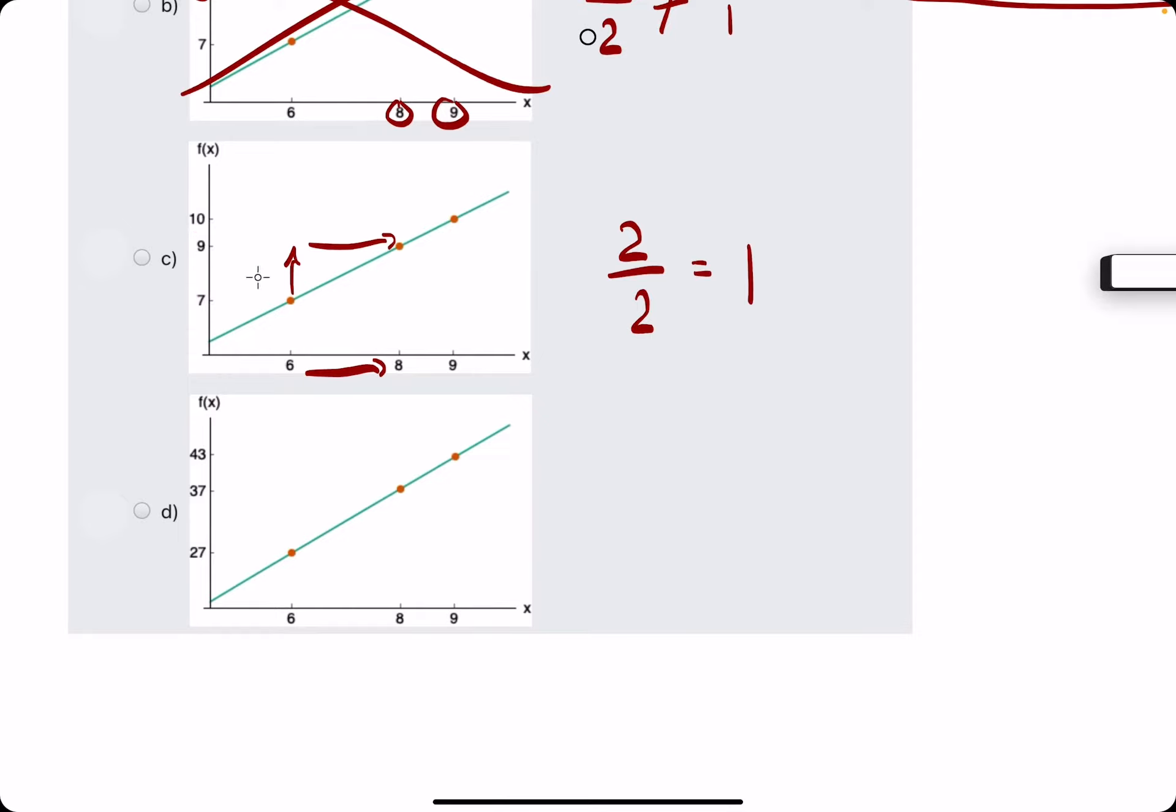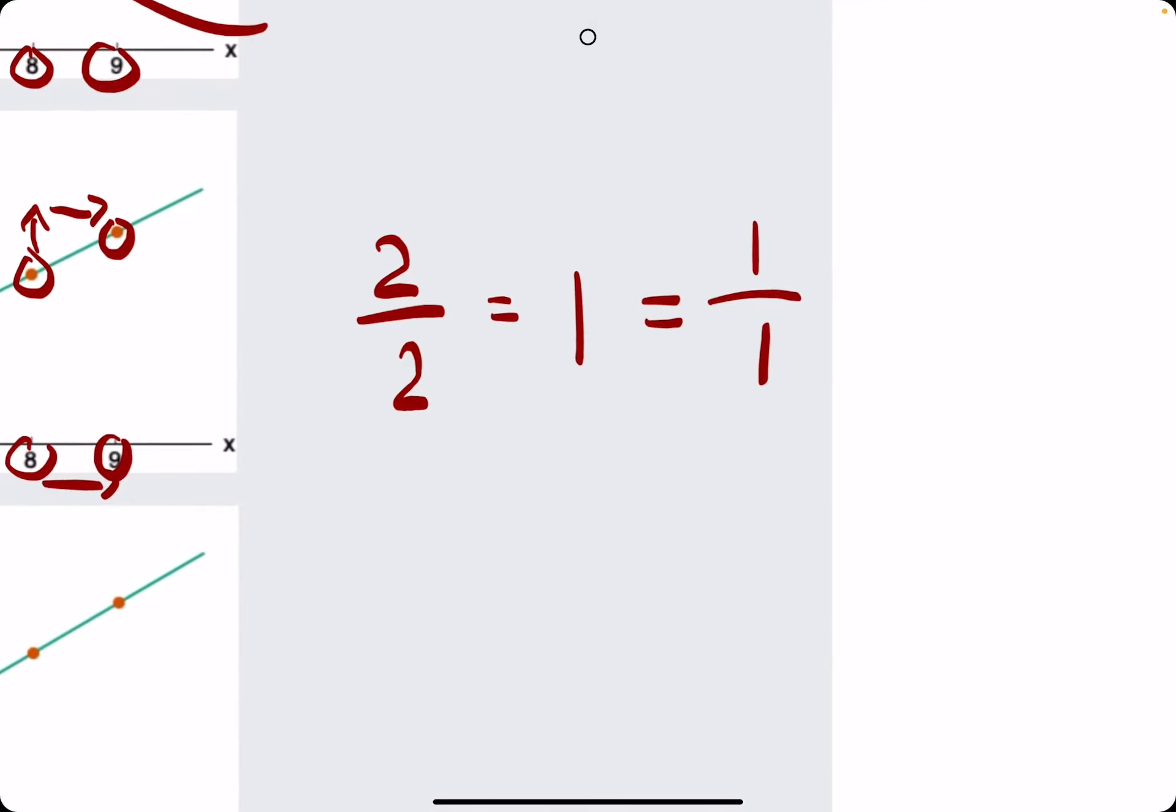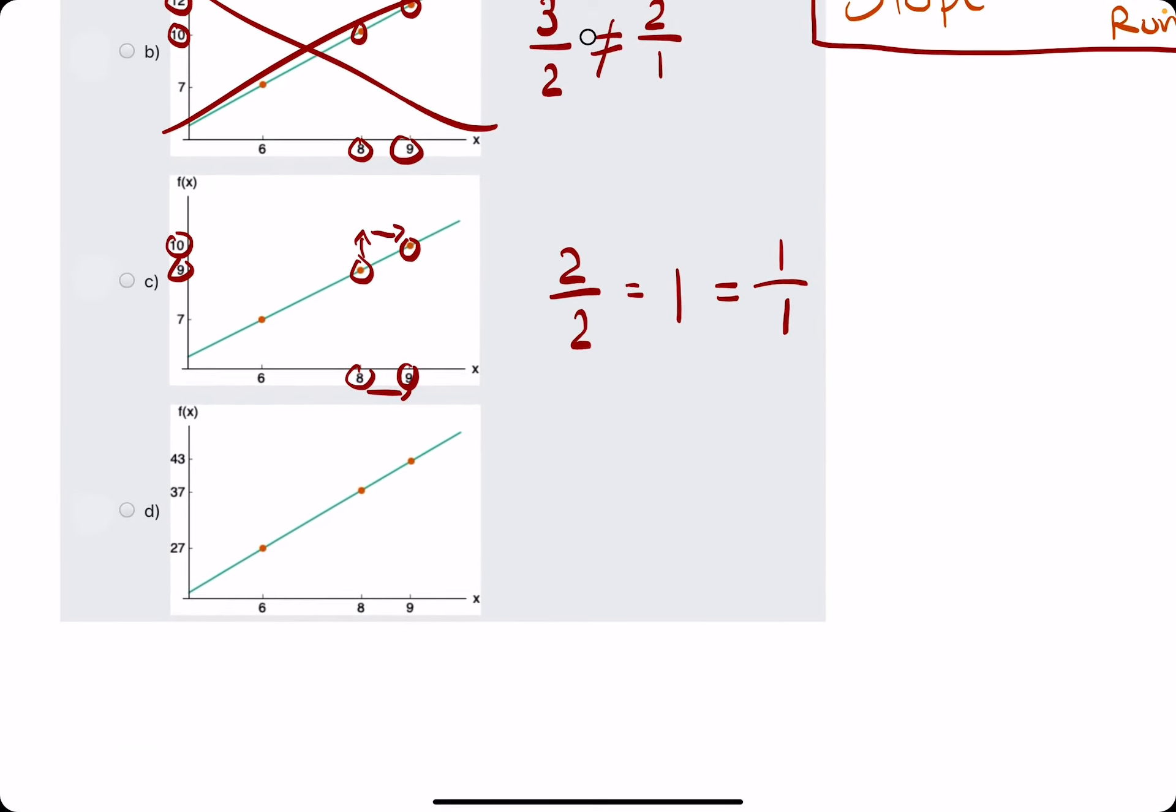And then we check the second and third points here to here. We have a rise from 9 to 10. There's a rise of 1. And a run from 8 to 9 of 1 as well. And it looks like 2 over 2 is equal to 1 over 1 because they both equal 1. So it looks like C will be our answer.